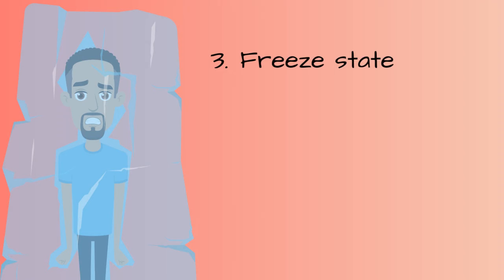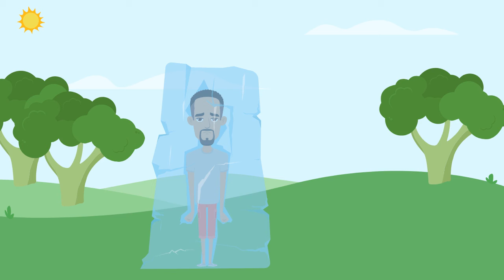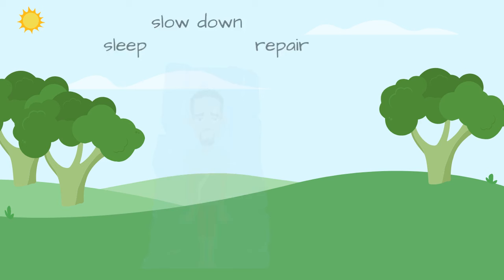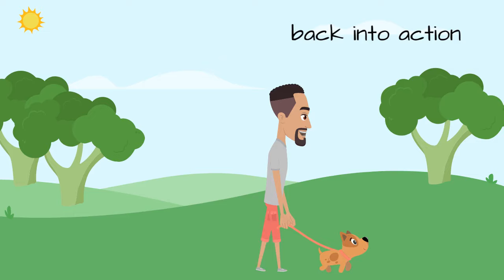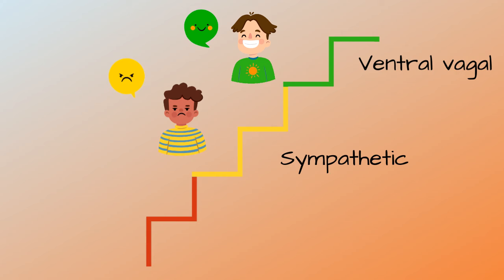The freeze state is controlled by our parasympathetic system, although the role is different. It is also known as the dorsal vagal state, and it is an emergency state — our most primitive response. The purpose of this state is to conserve energy for the most basic functions. When we are in this state we have a tendency to stillness and may shut down completely — to sleep, repair, slow down and recover, to help us go back into action when we are ready. The ventral vagal, sympathetic, and dorsal vagal states work like a ladder, where the ventral vagal state is at the top, the sympathetic state is in the middle, and the dorsal vagal state is at the bottom.